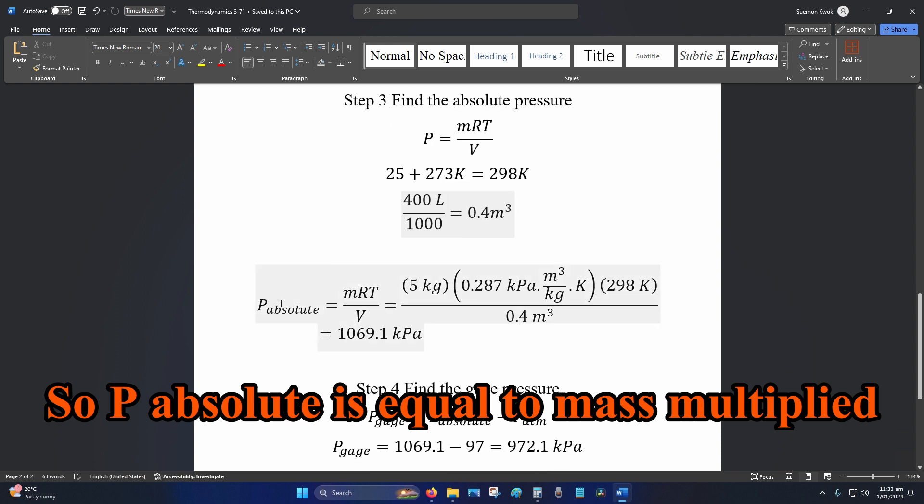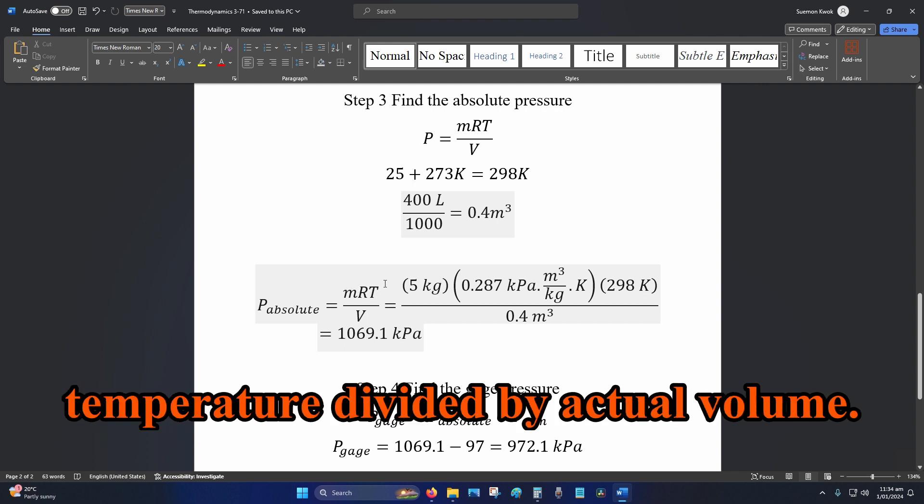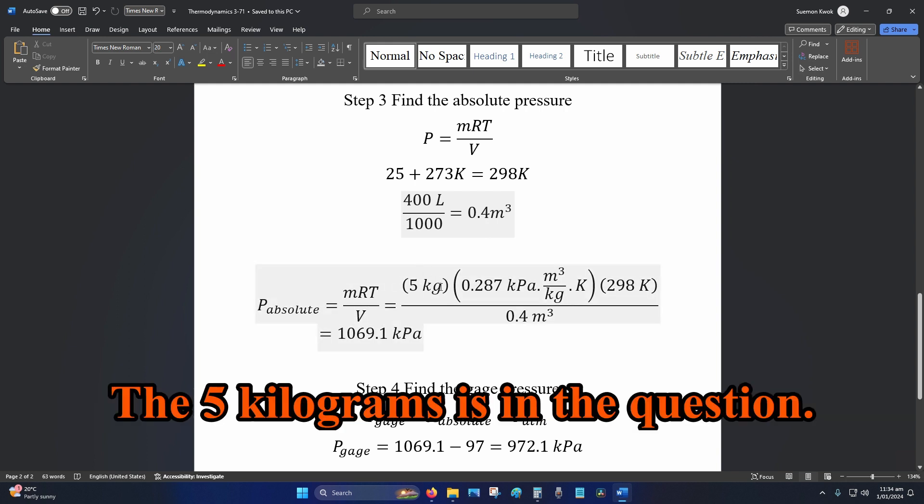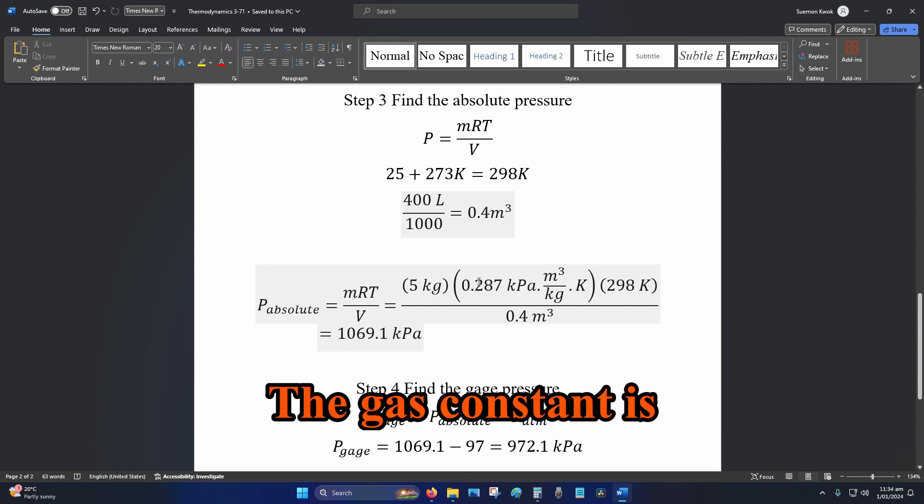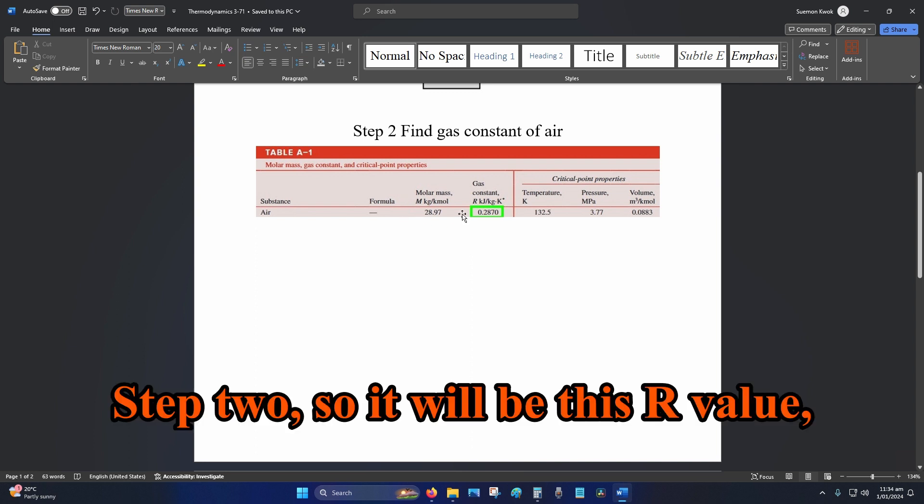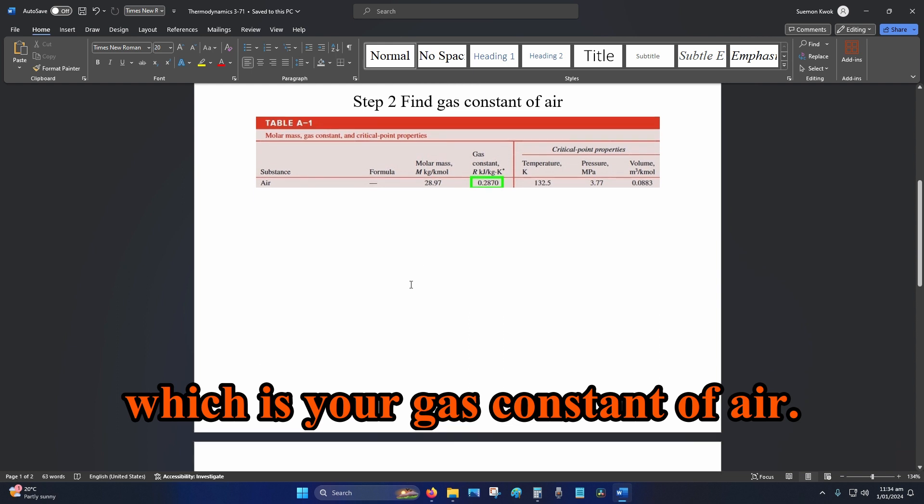So P absolute equals mass multiplied by gas constant multiplied by absolute temperature divided by actual volume. The 5 kilograms is in the question. The gas constant is what you found in step two, so it will be this R value which is your gas constant of air.